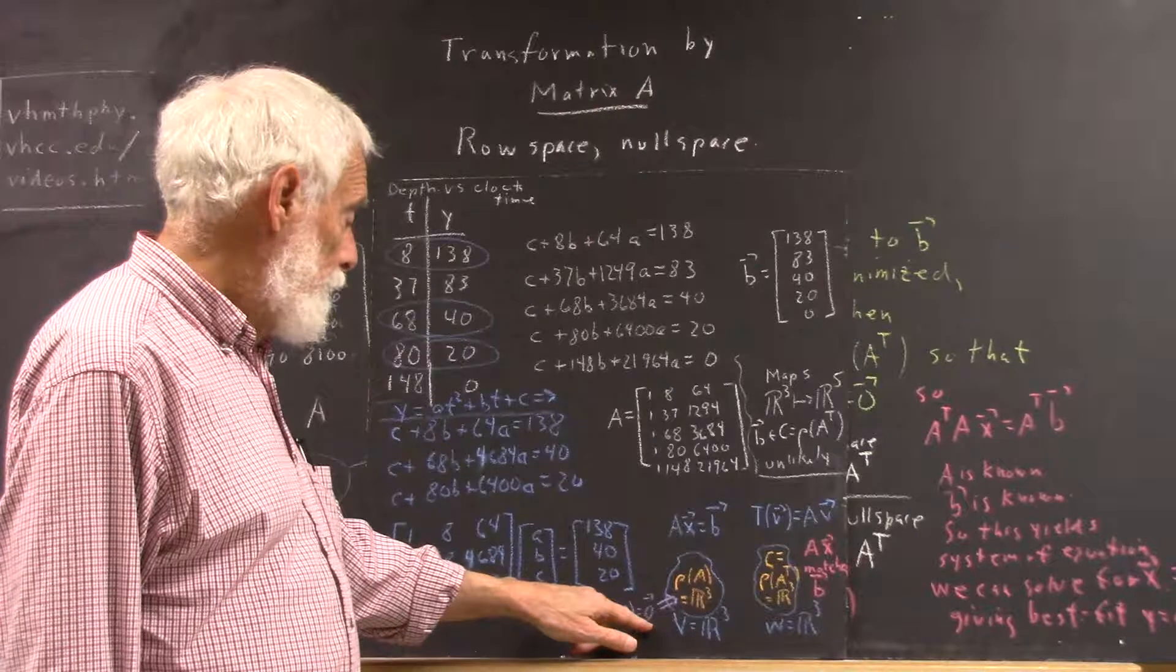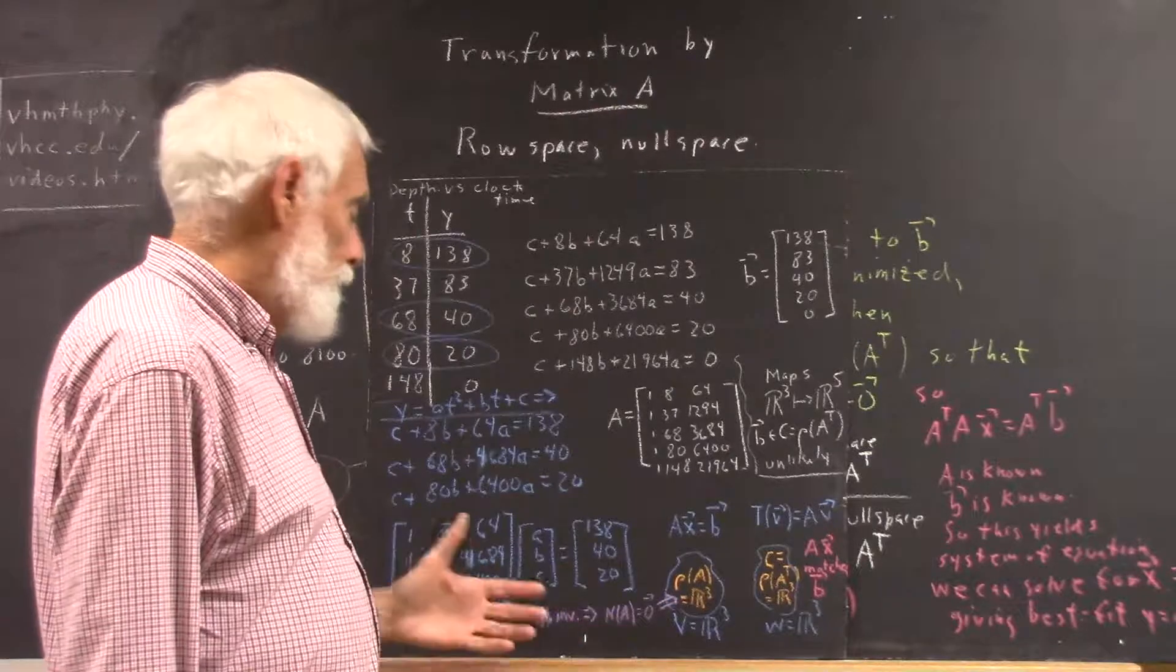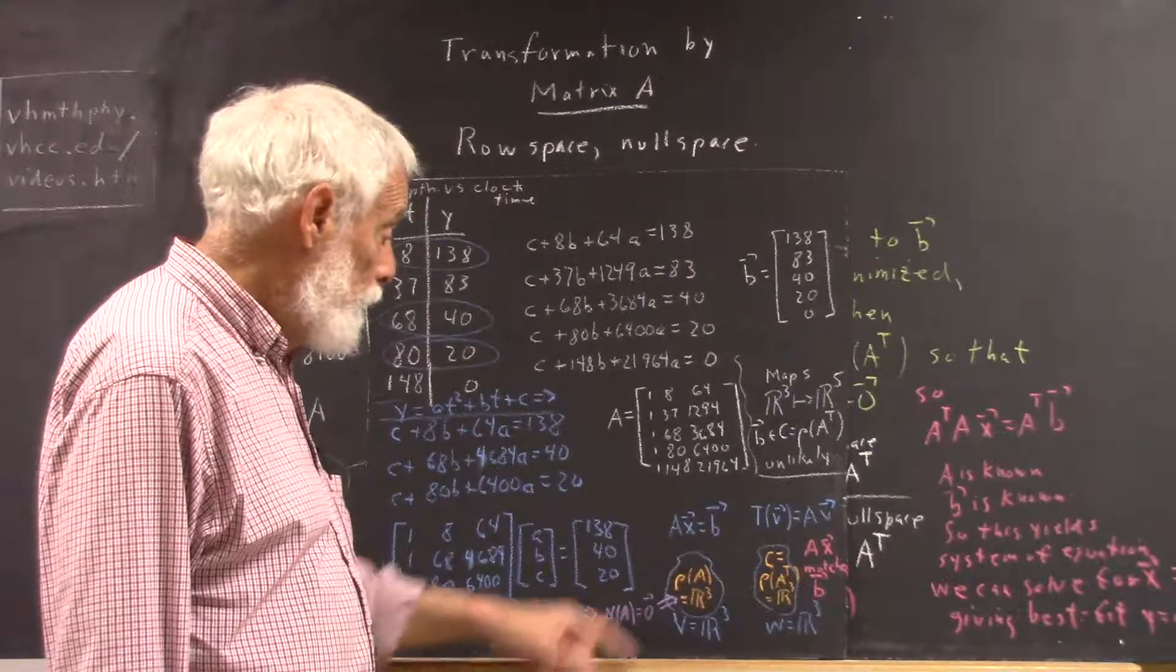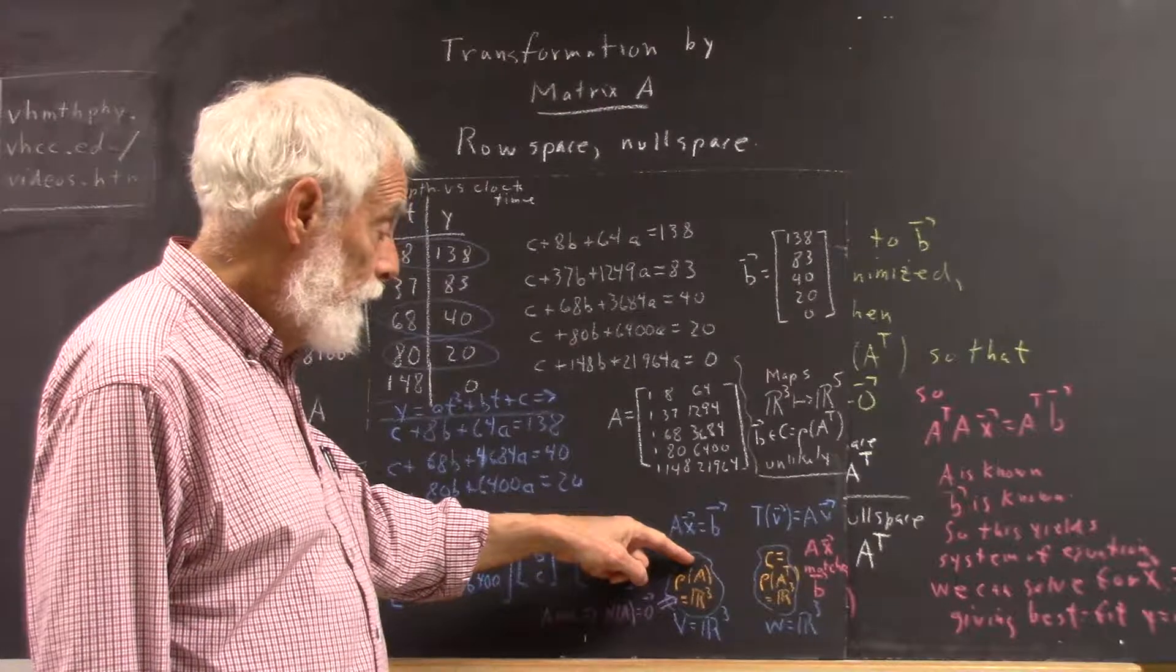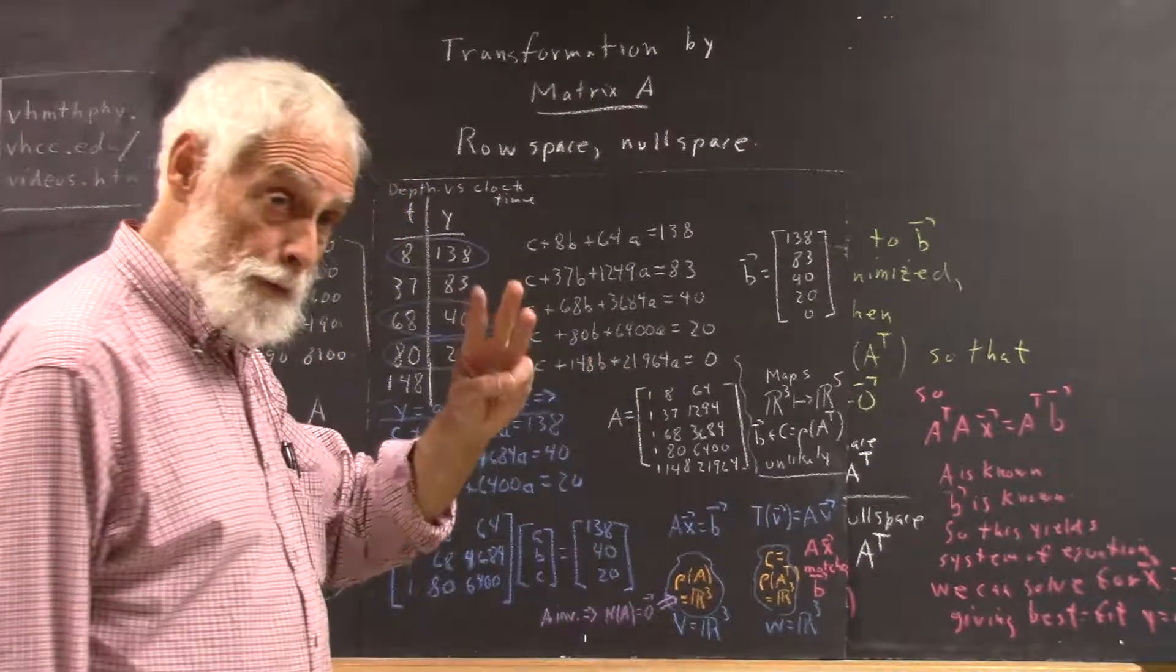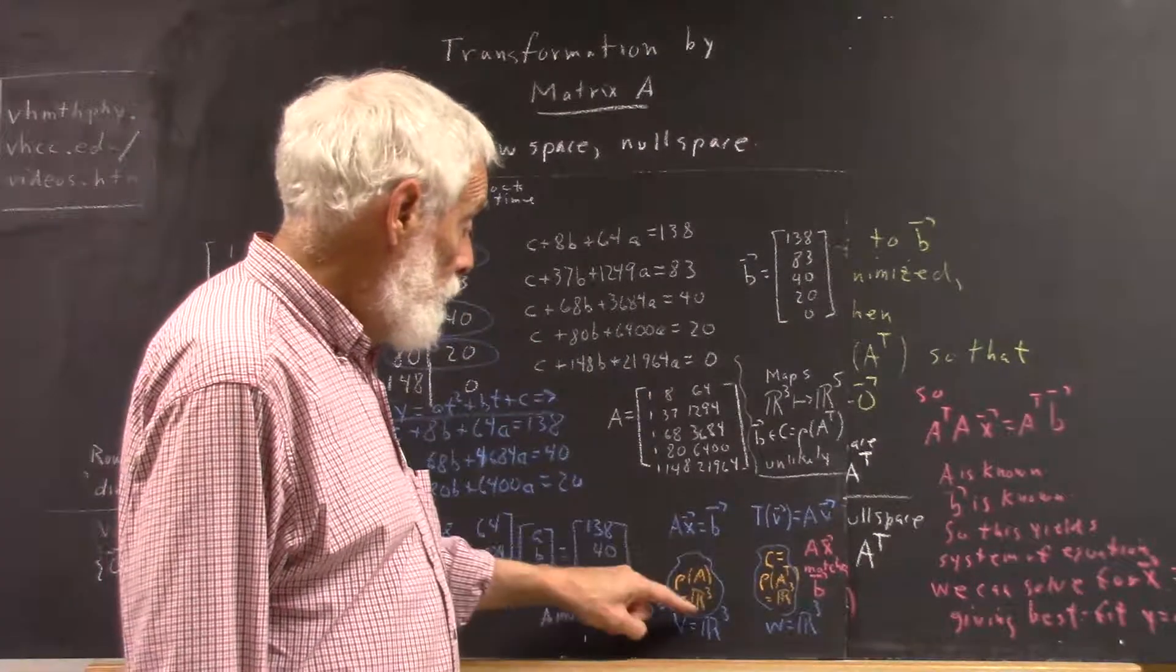The vector space that we would be mapping with this map would be r3. Well, the fact that the nullity is zero tells us that the rank of the matrix, or the dimension of the row space, is three, so that the row space of a would be r3.